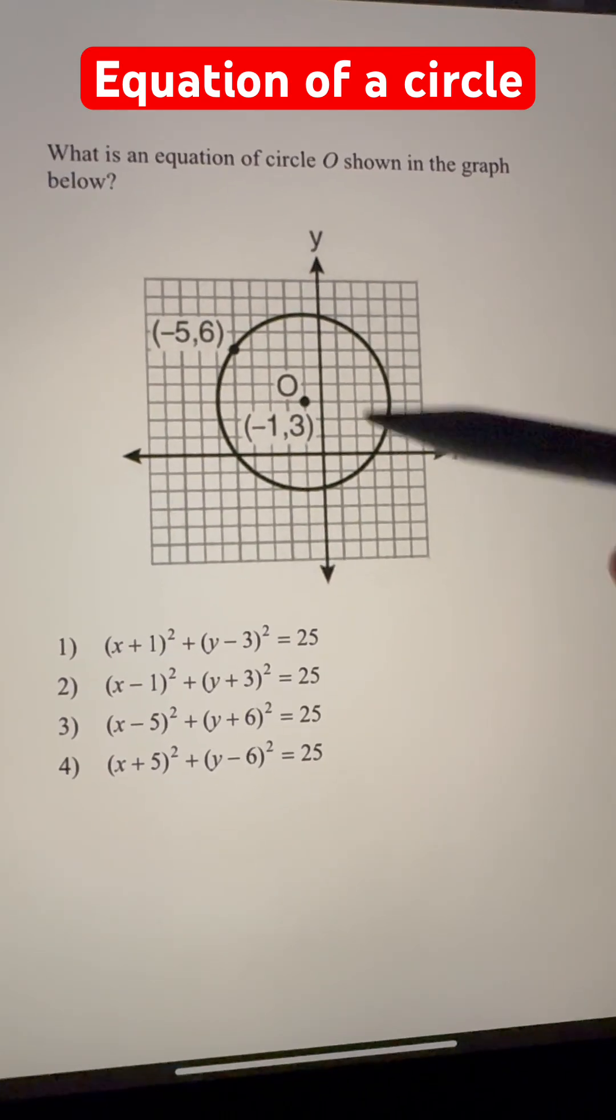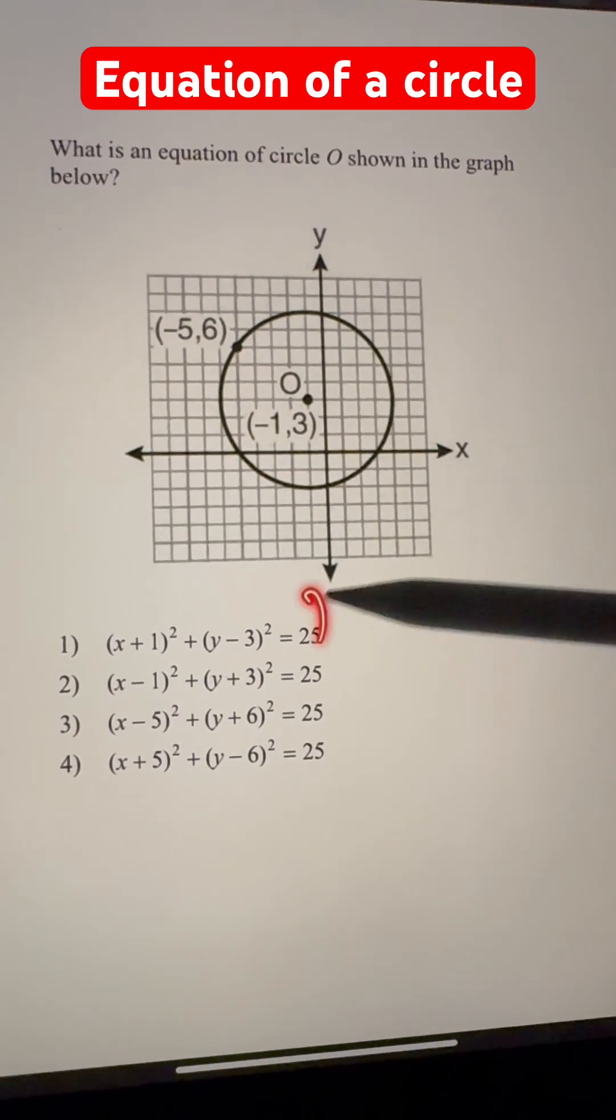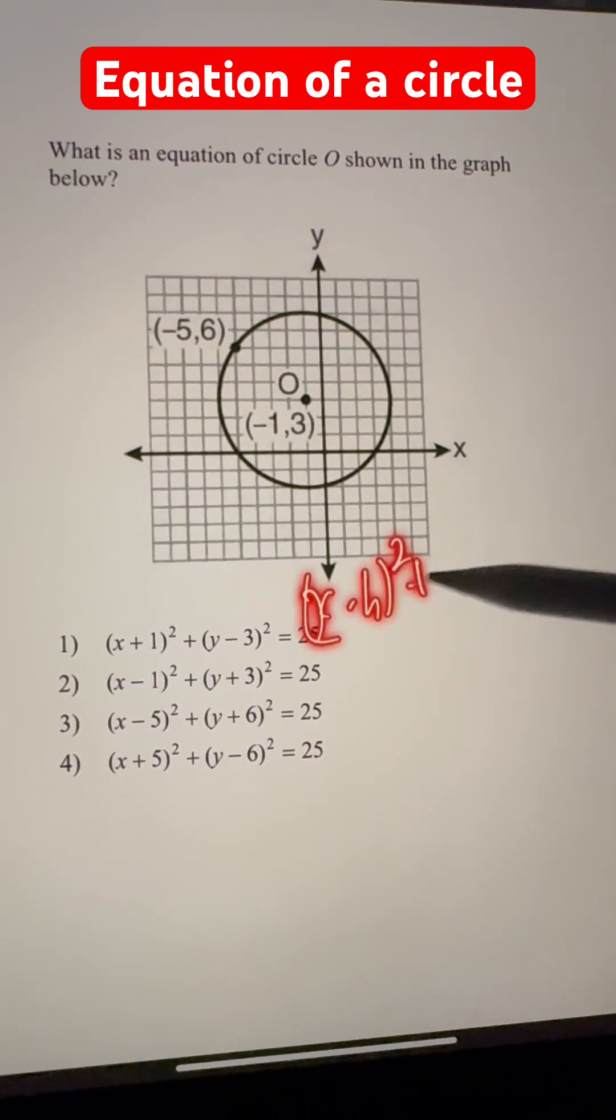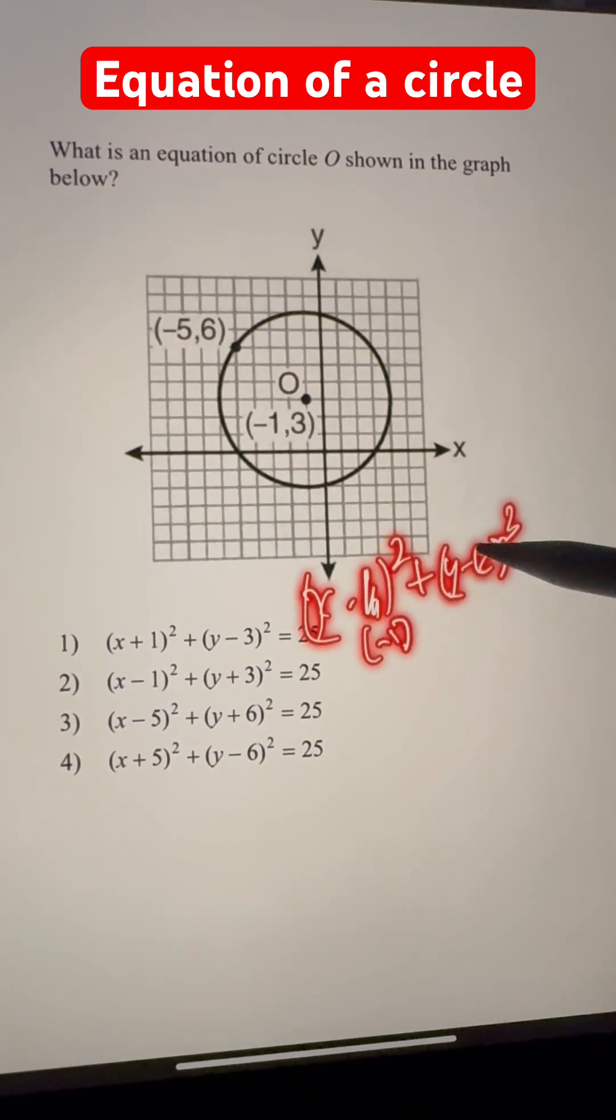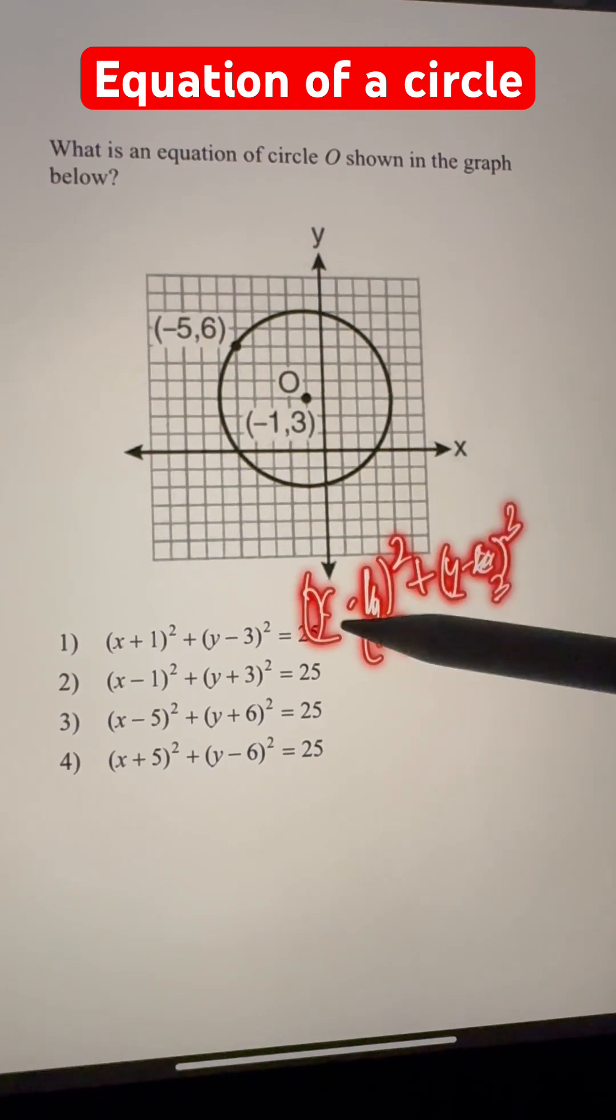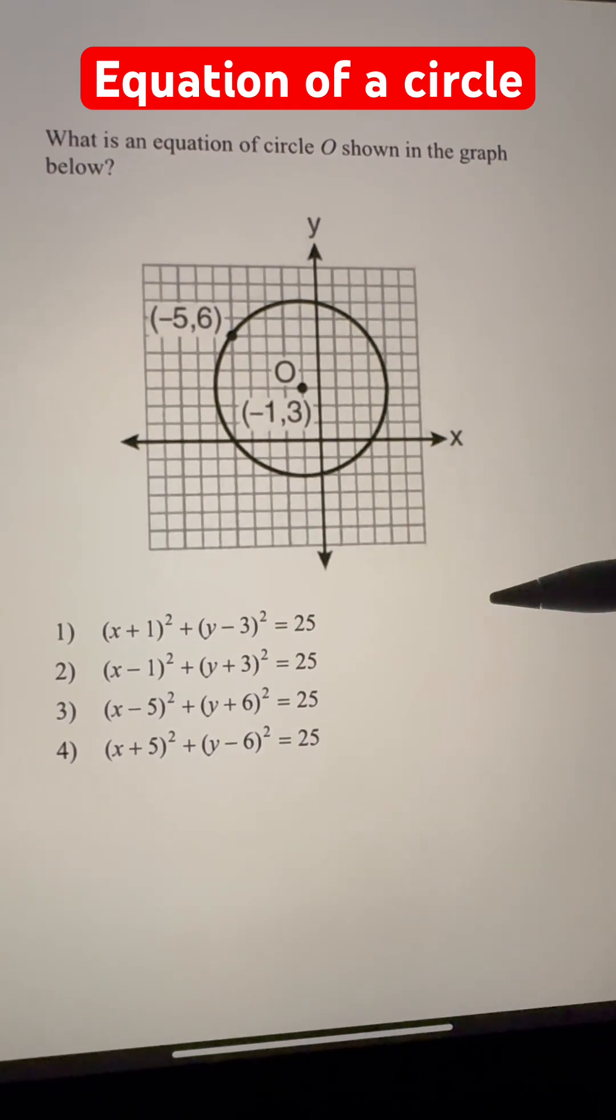So let's find the center of the circle. It's given here: (-1, 3). So we can substitute h = -1 and k = 3 into (x - h)² + (y - k)². x minus -1 becomes x + 1, and y minus 3 is just y - 3.